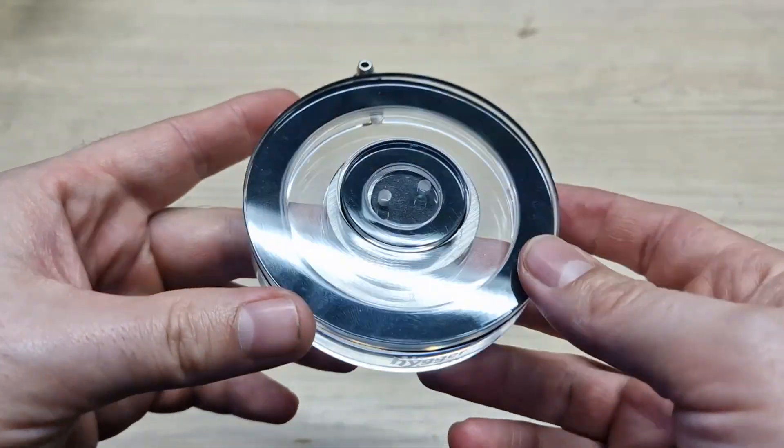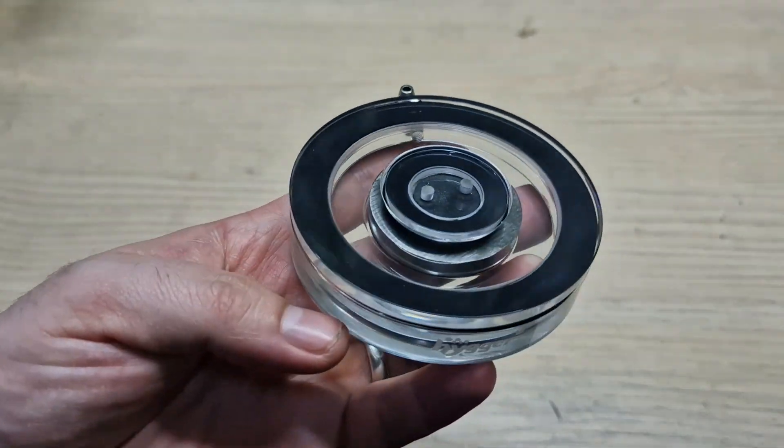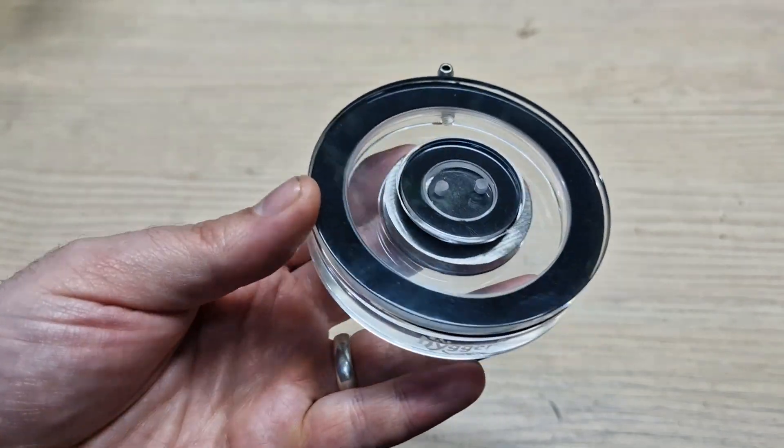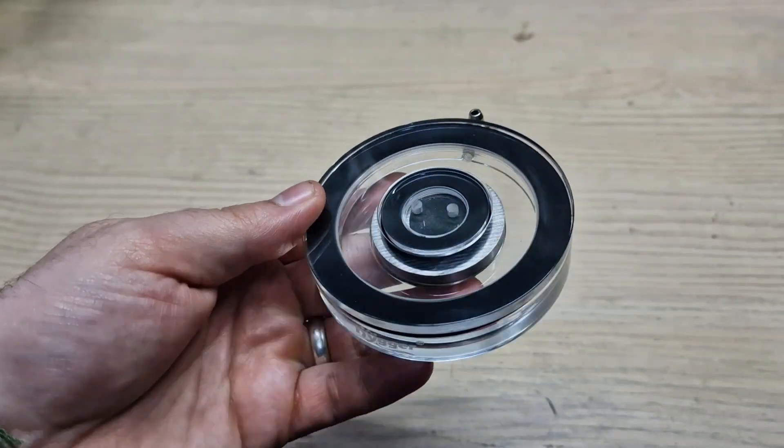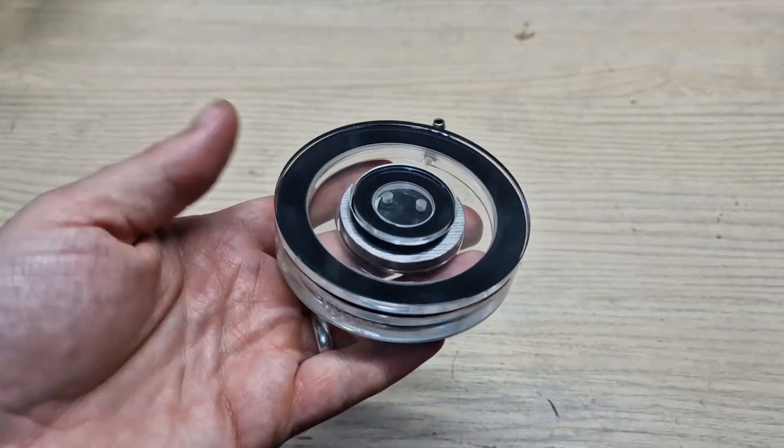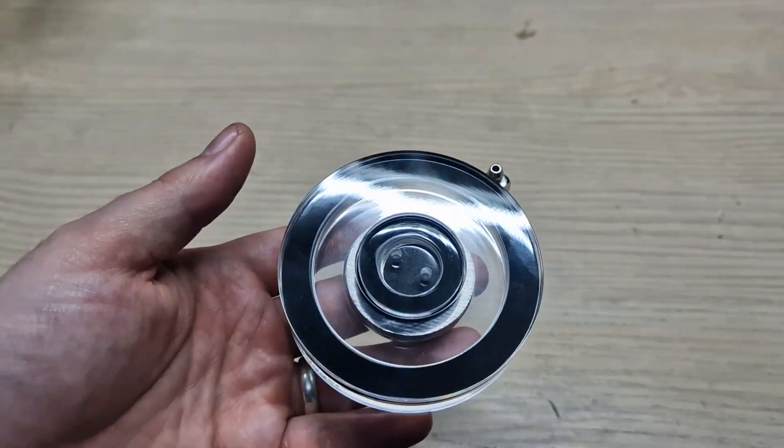Secondly, we have a metal weight in there. I'm assuming it's a weight because it's really quite heavy. I've just weighed it. This whole airstone is 143 grams, which is actually quite hefty. I'm assuming that is just to keep it on your substrate rather than it floating around once it's got air inside of it.